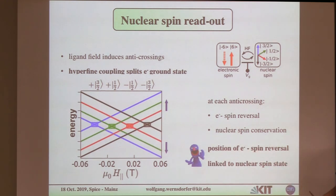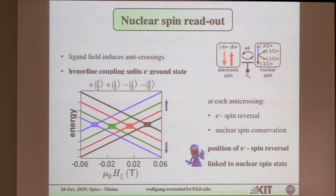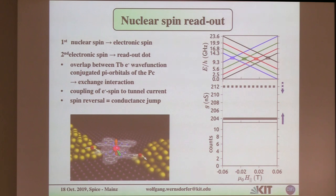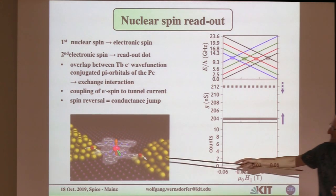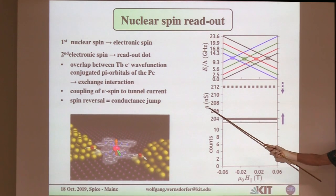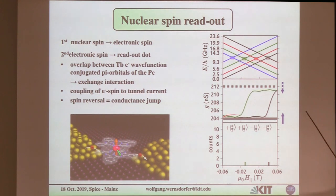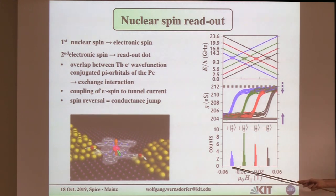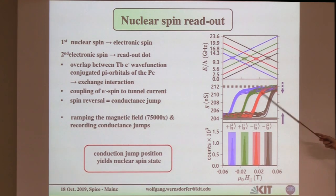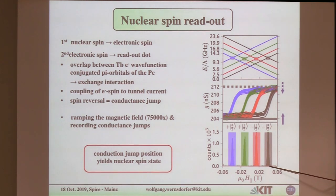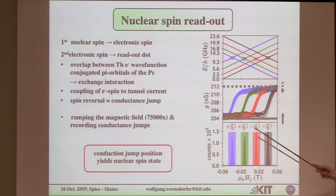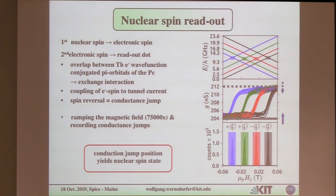We measure the conductance at a working point and scan the field. At a certain point we see a small jump. Repeating this many times, we find that there are only four different fields where the big spin can reverse. I make histograms and see that they are well separated — so I know exactly when I measure my system, it's in one of these four states. What happens between measurements I don't know, but when I measure it, I know where this nuclear spin is.